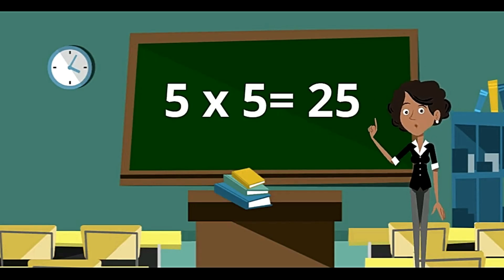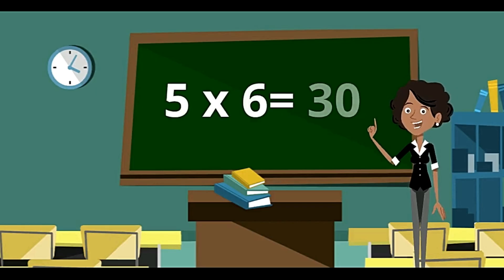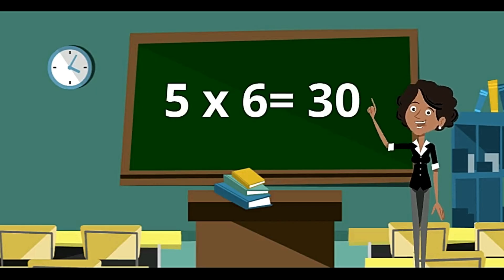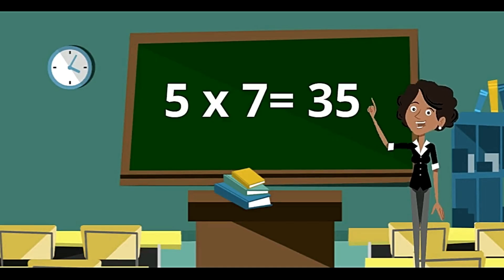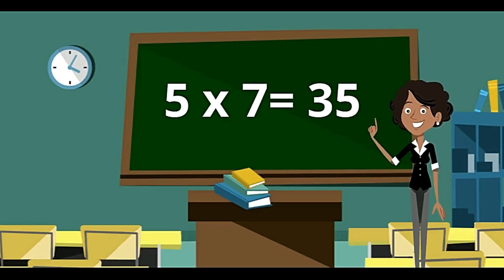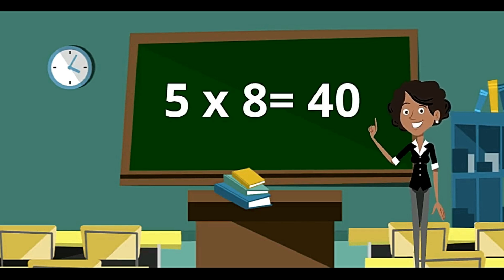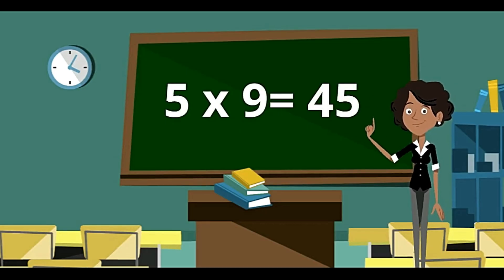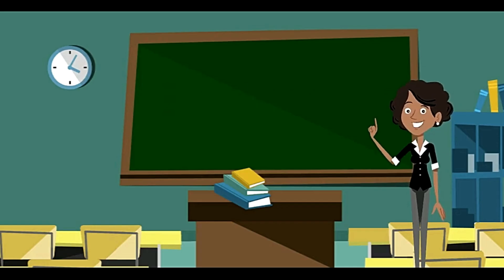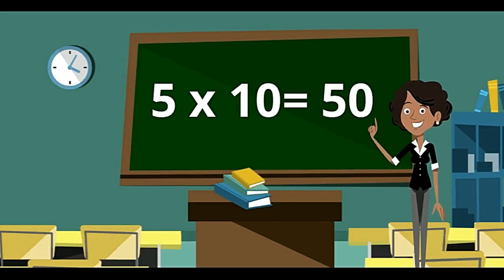5 fives are 25. 5 sixes are 30. 5 sevens are 35. 5 eights are 40. 5 nines are 45. 5 tens are 50.